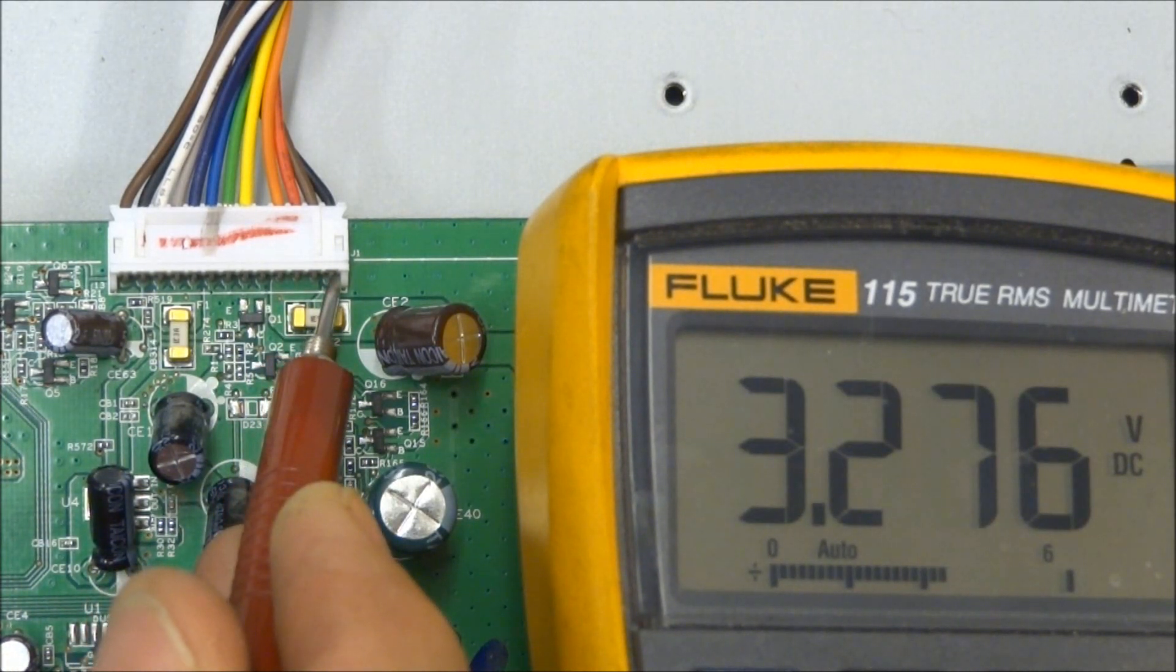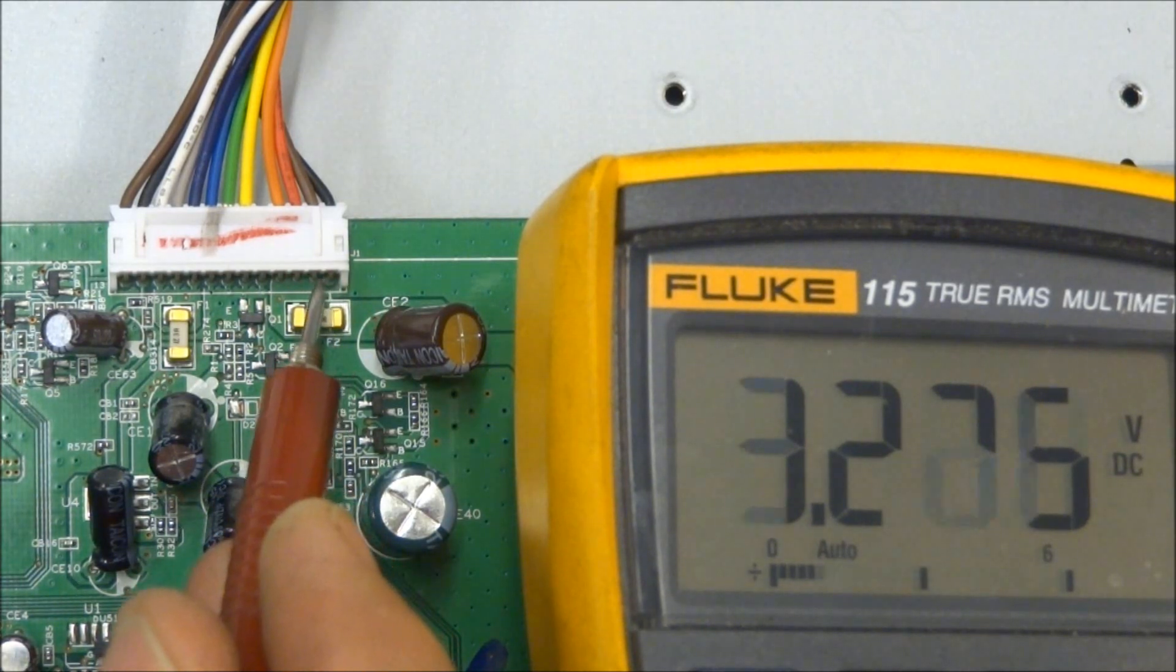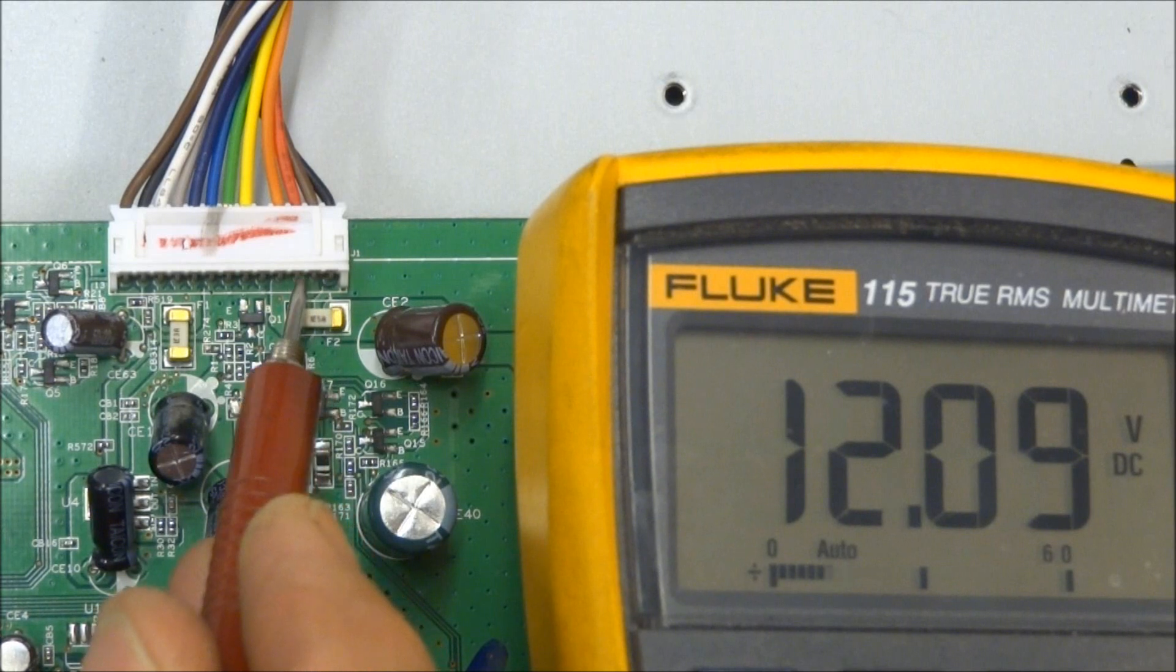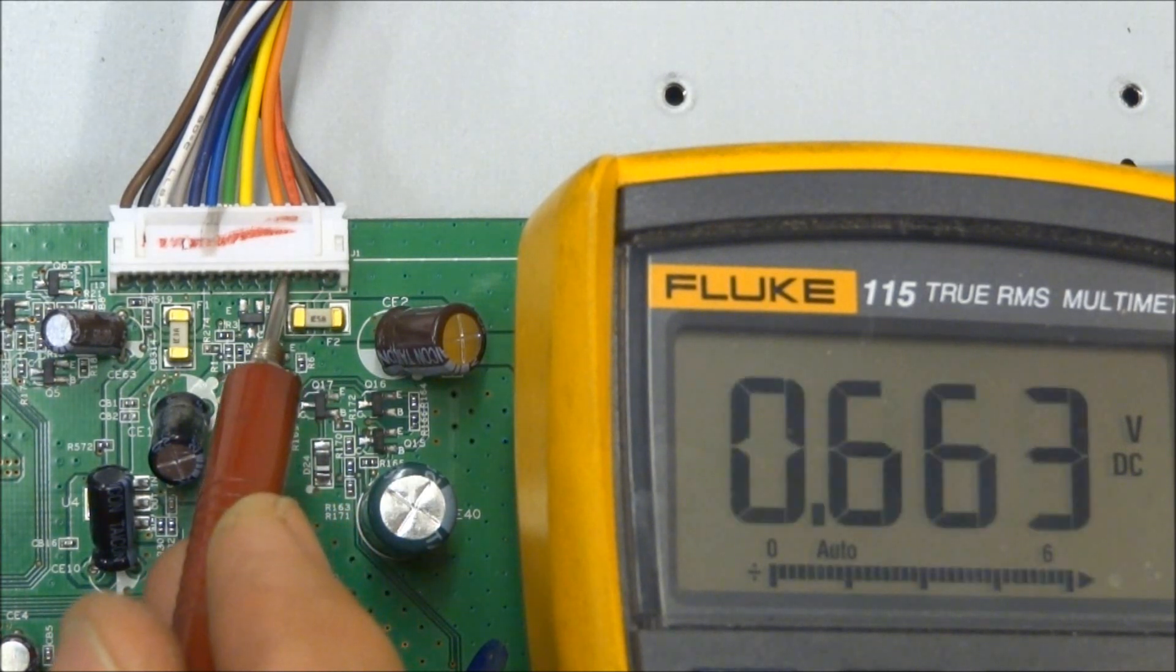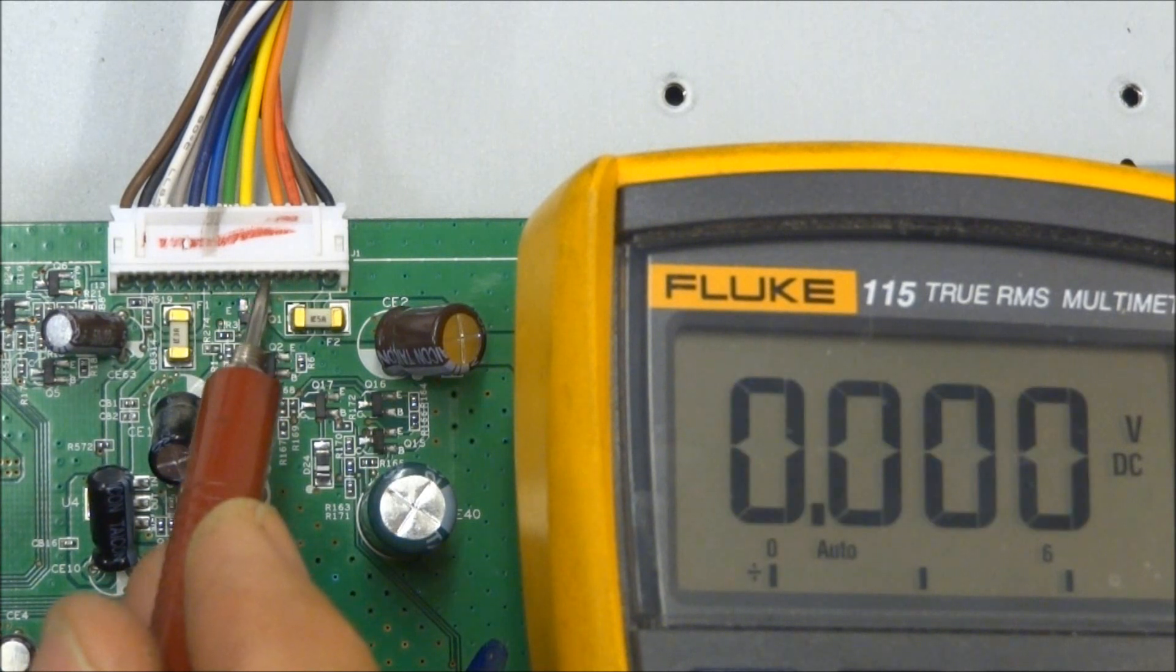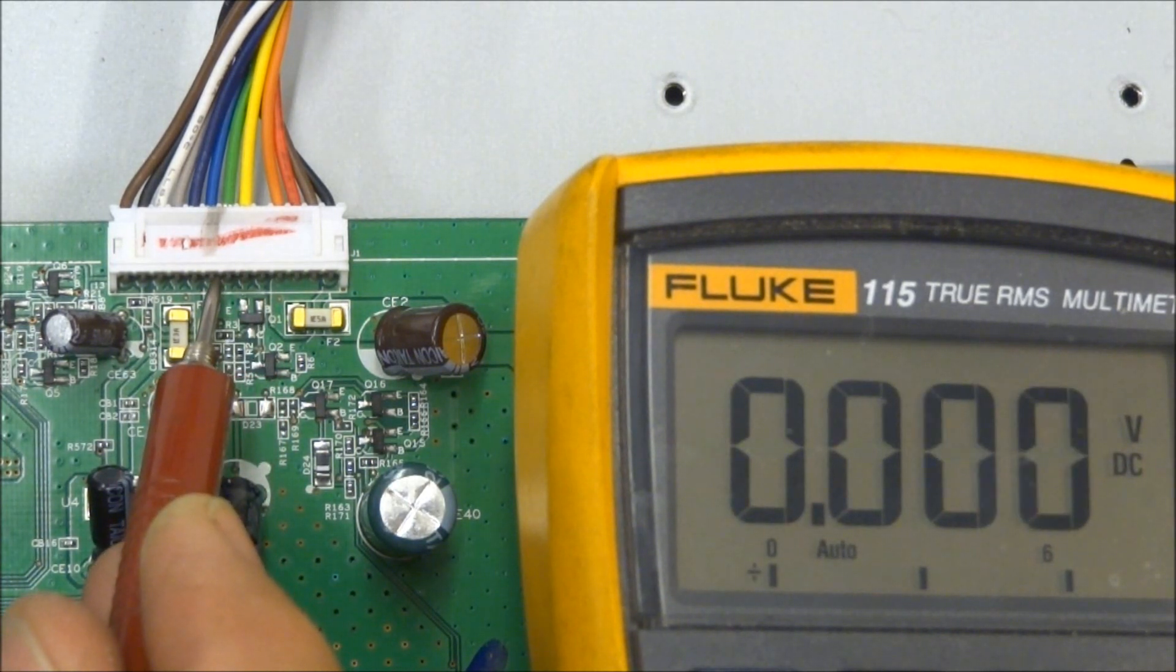All right, there's pin 1. That is the power supply on command. 3.2 volts, so 3.3. Now we should have 12 volts on pins 2, 3, and 4. We do. Pins 5, 6, 7, and 8 are all ground.